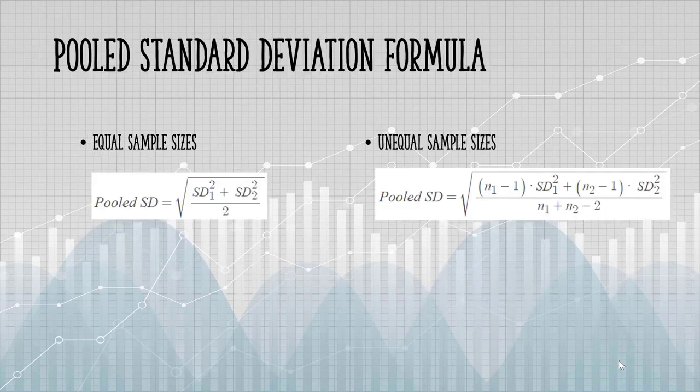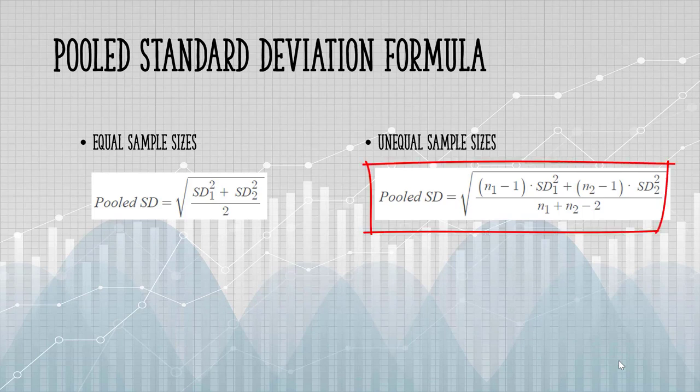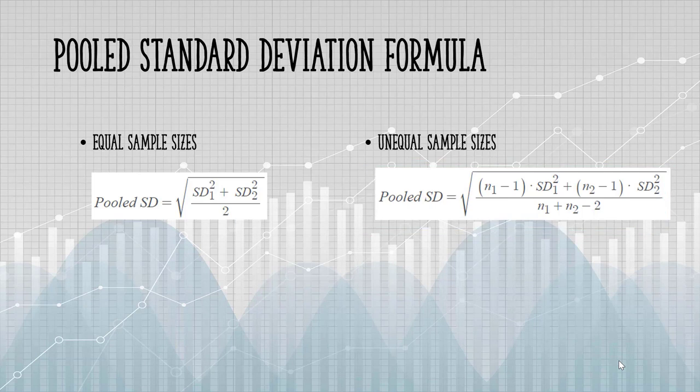If you have equal sample sizes, you'll want to use this formula for the pooled standard deviation. If you have unequal sample sizes, the formula is a little more complicated. You're basically adjusting for N, which is the number of items in each sample. N1 would be the items in sample 1, and N2 the number of items in sample 2.